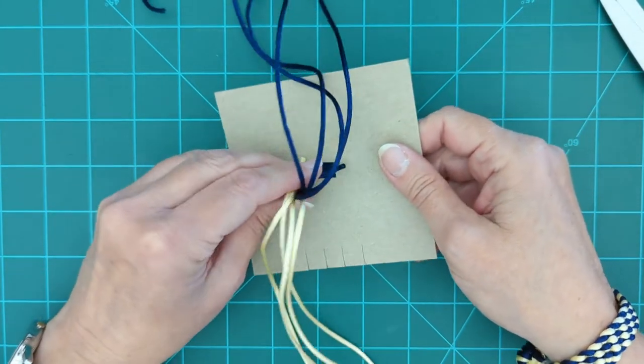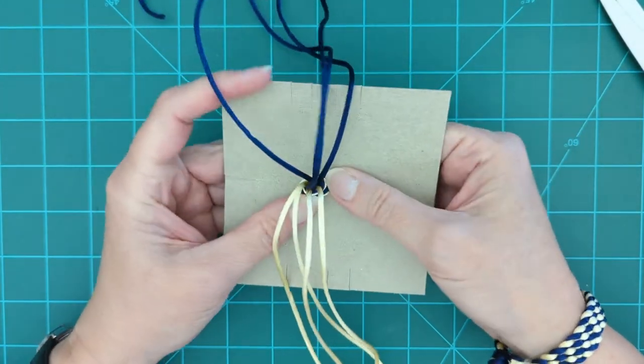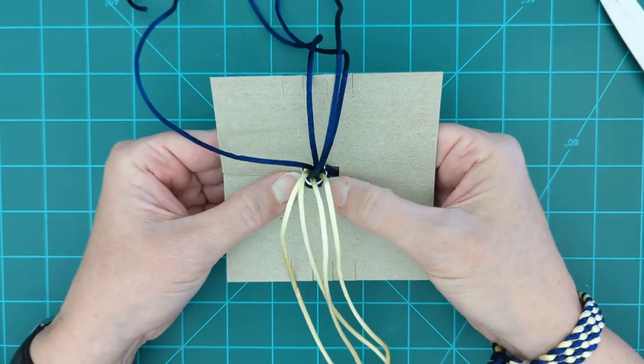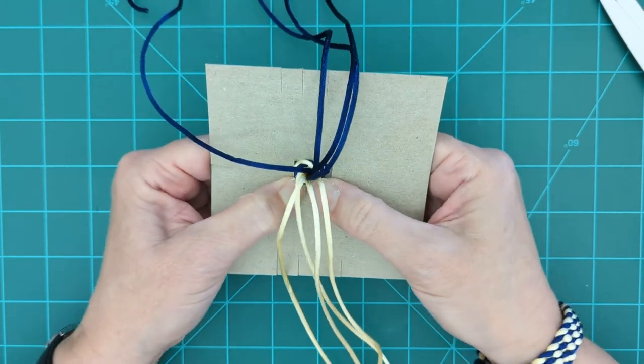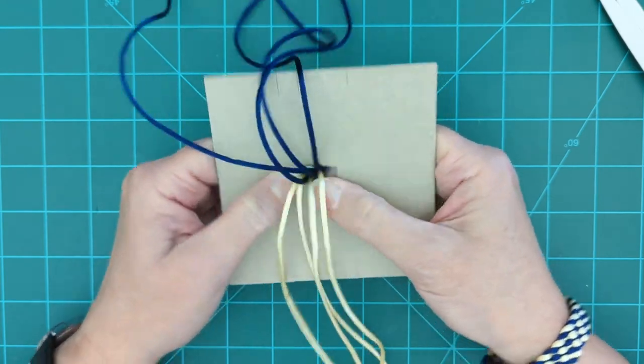And if our hole is big enough, we're going to poke our knot through the center hole on our disc. Mine is not wanting to go. There it goes.